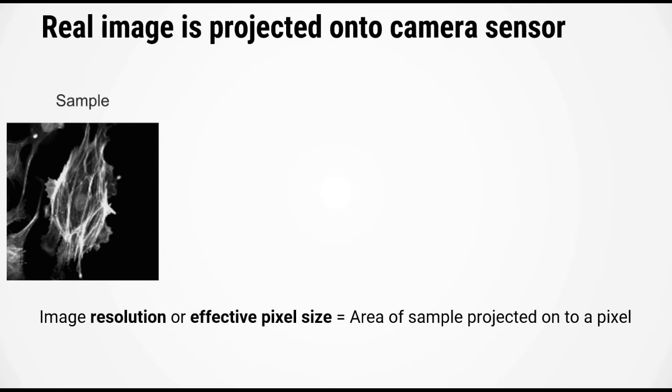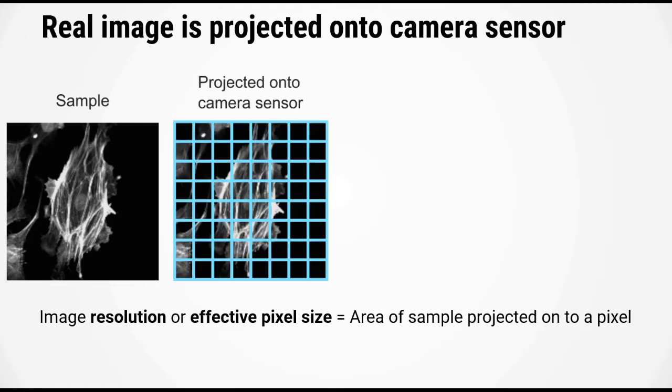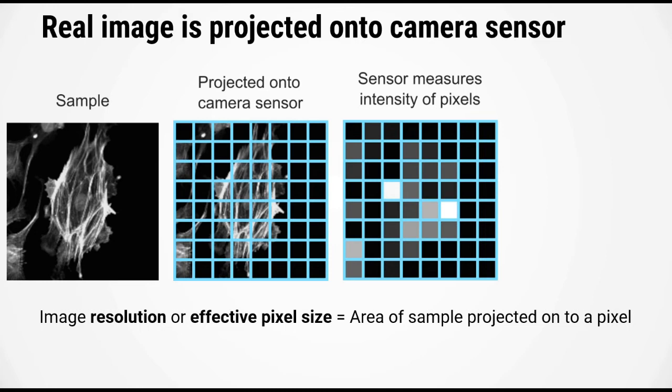Let's take a closer look at how this works. On the left here, we have an image that represents what the sample looks like. The light from the sample is projected onto a camera sensor, which consists of a grid of pixels. Each pixel measures the amount of light that falls upon it, and this gives us the image.